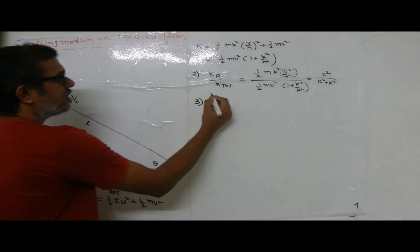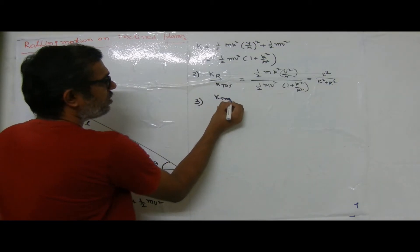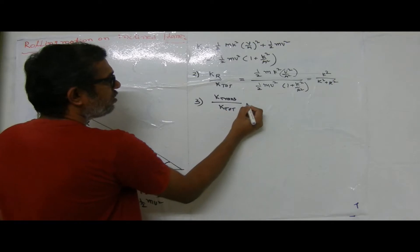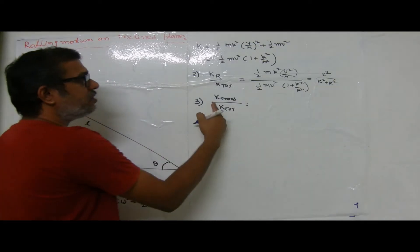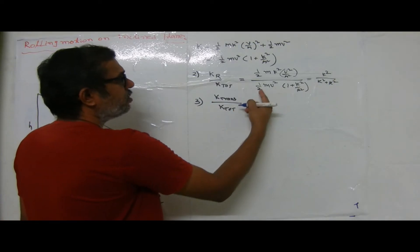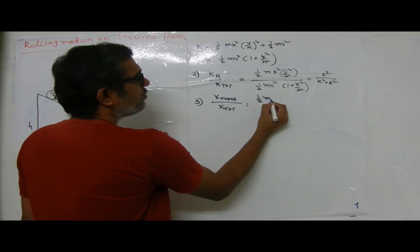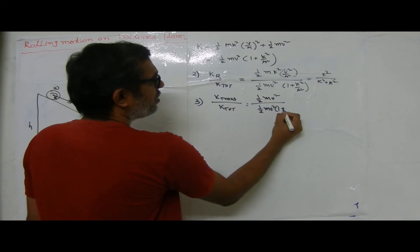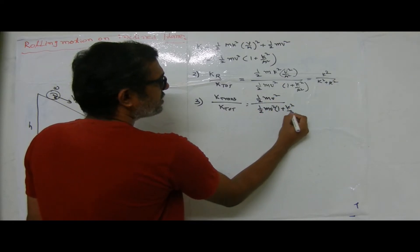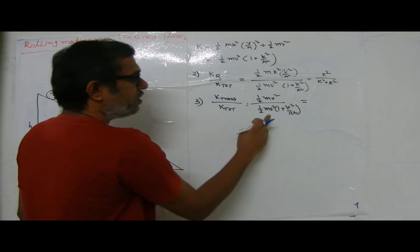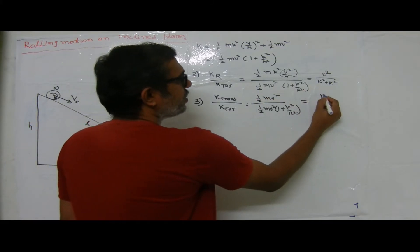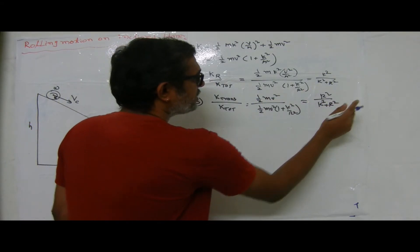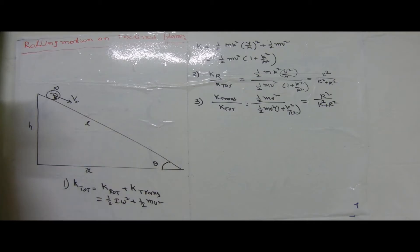The third important result is the ratio of translational kinetic energy to total kinetic energy. This equals half mv² divided by half mv²(1 + k²/r²). Upon canceling, we get r² divided by (k² + r²).